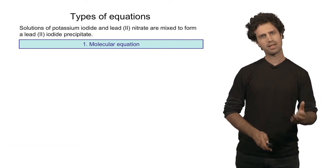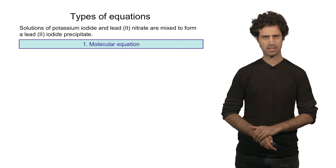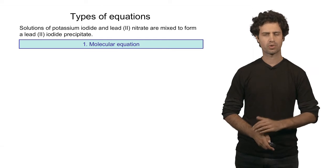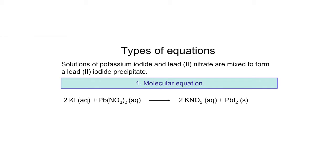In the molecular equation, all the participating species are written as individual compounds. We have on the reactant side potassium iodide written as one compound in the aqueous phase. We also see lead 2 nitrate as a single compound in the aqueous phase.